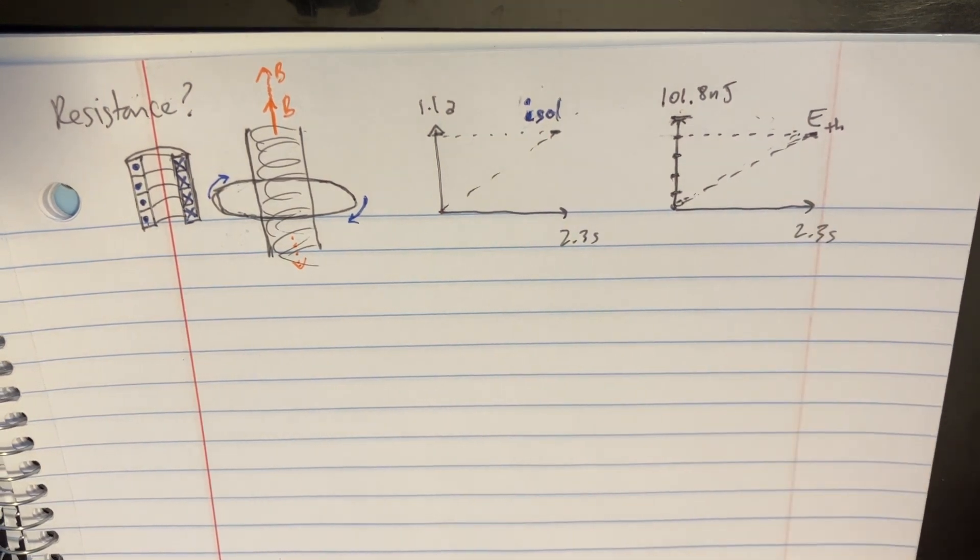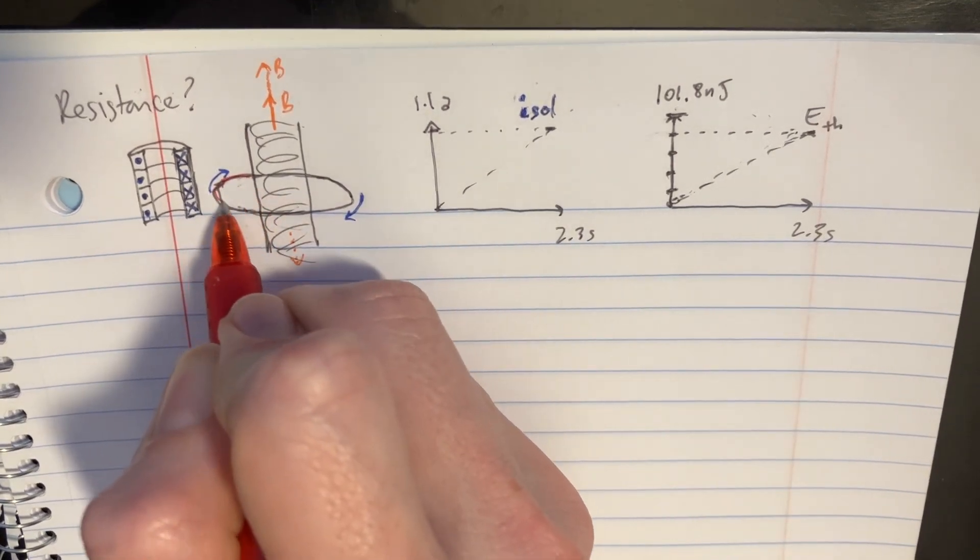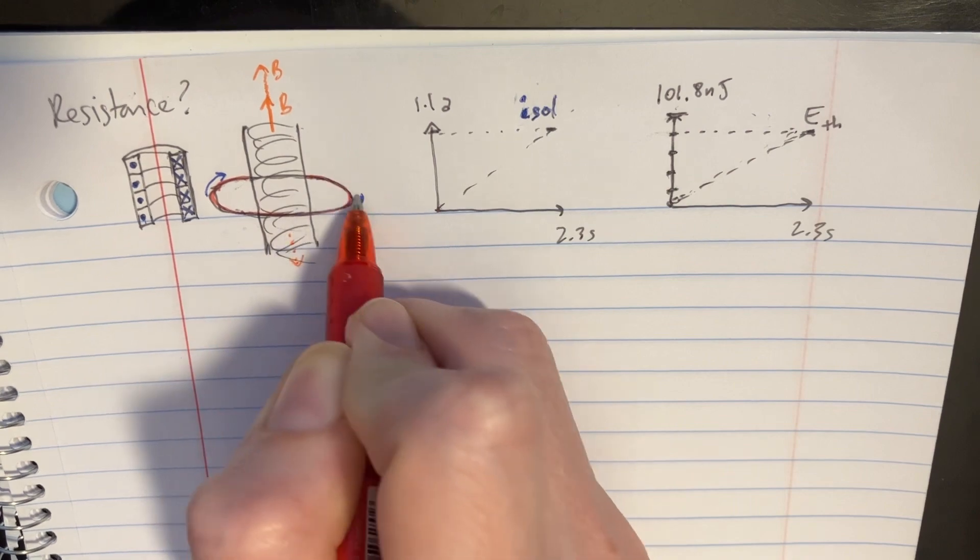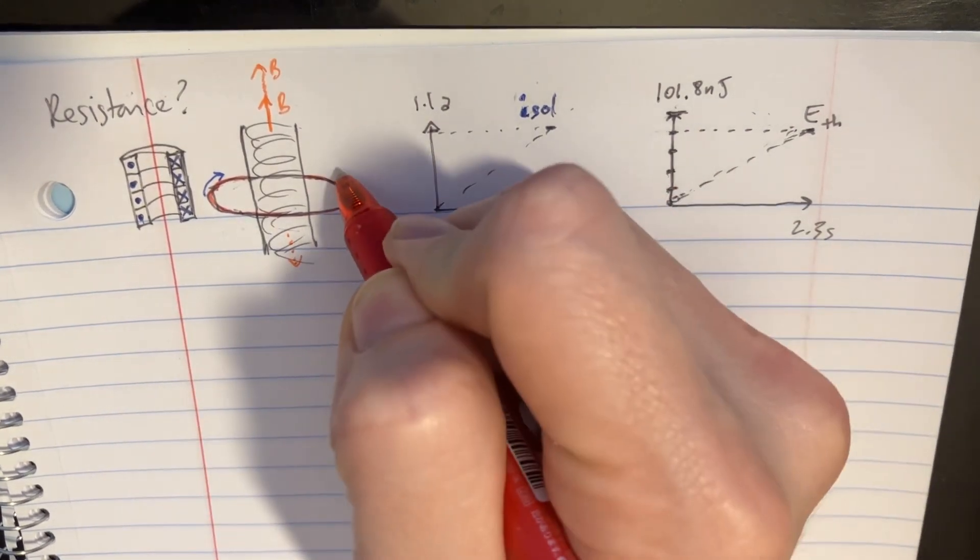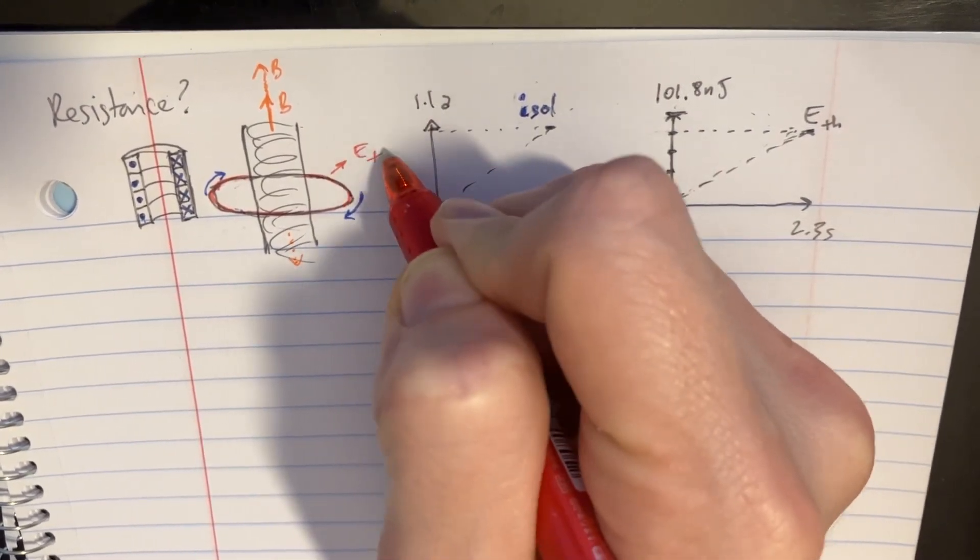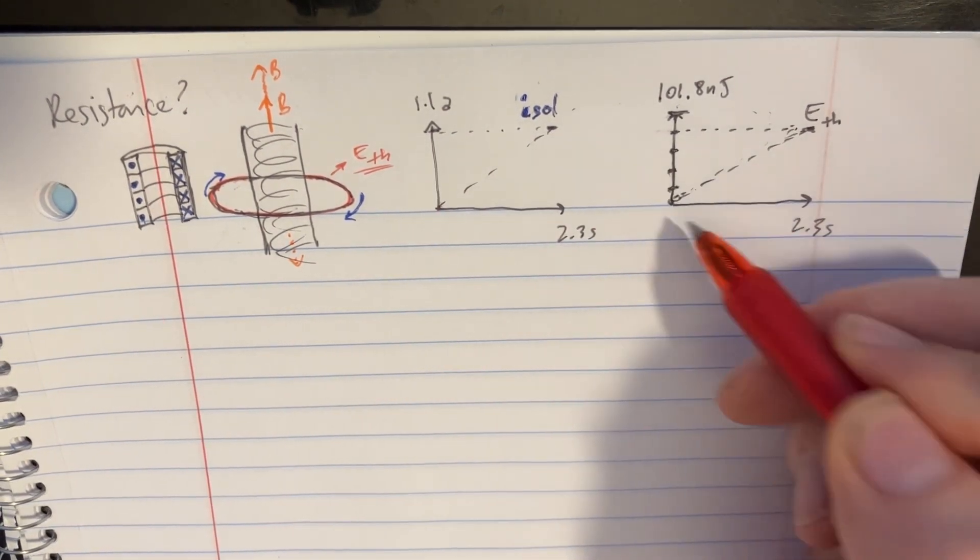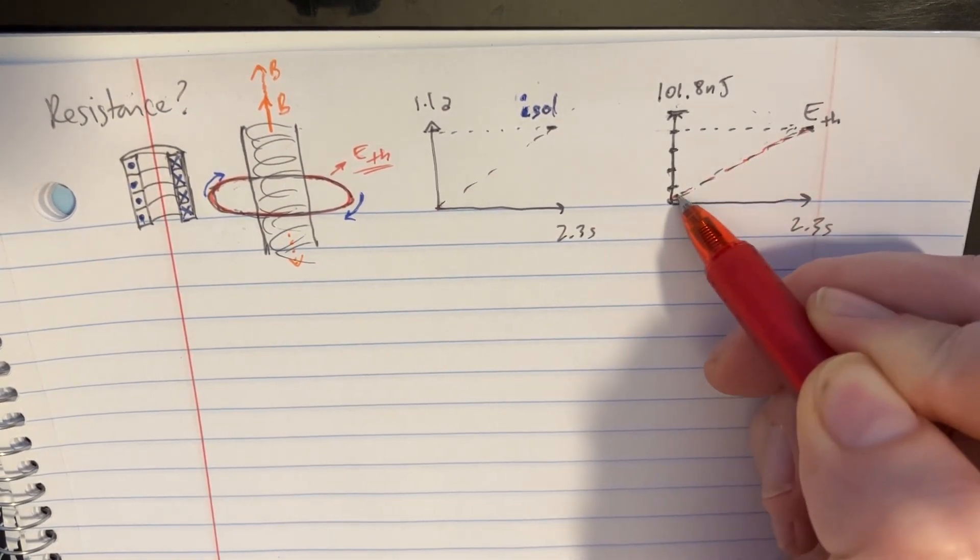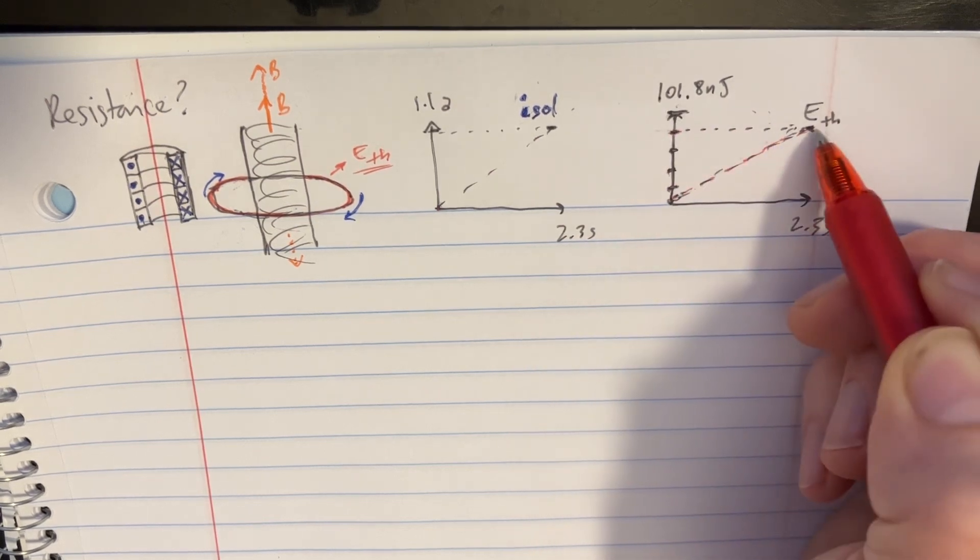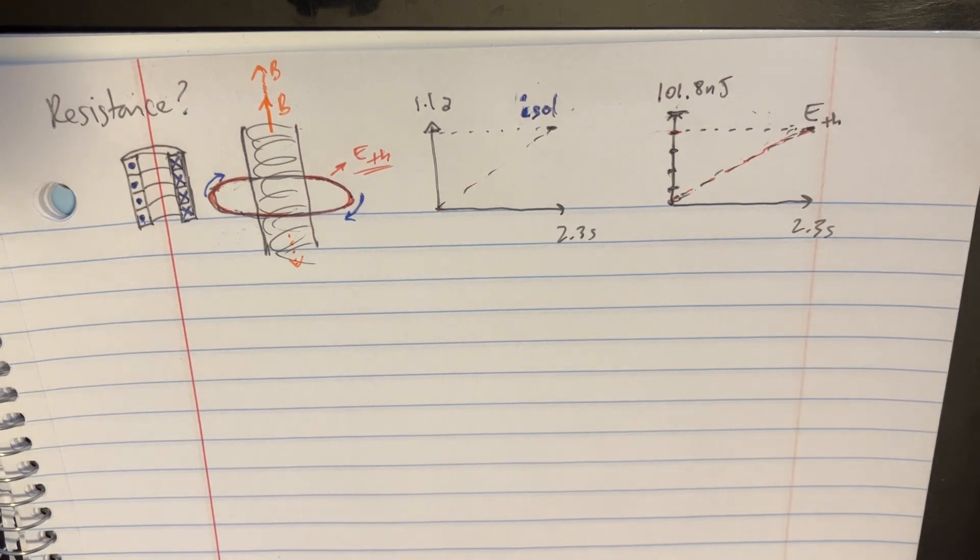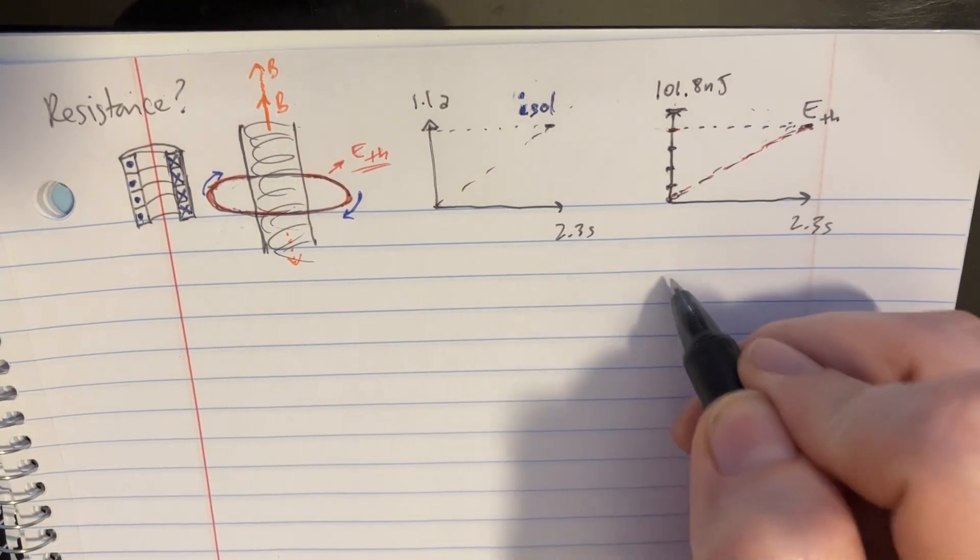Because of this current that's being induced, this is creating some sort of heat. Apparently there's like a resistor inside of there and it's creating some sort of energy thermal energy dissipation which we could see from this graph right here. Now it's not going all the way to the top over there, so let's keep a note of that.